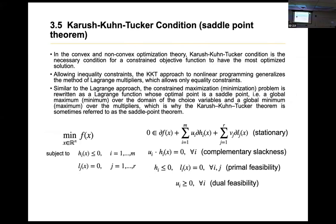The Karush-Kuhn-Tucker (KKT) condition — also called the saddle point condition — in convex, concave, and non-convex optimization theory, is the necessary condition for a constrained objective function to have the most optimized solution. It allows inequality constraints, generalizing the method of Lagrangian multipliers which only allows equality constraints. If the KKT condition is satisfied, you can find the optimal solution.